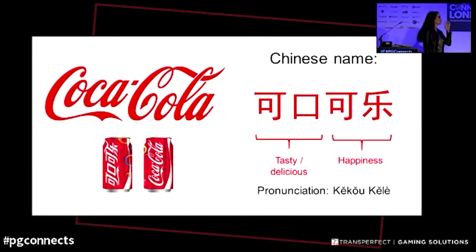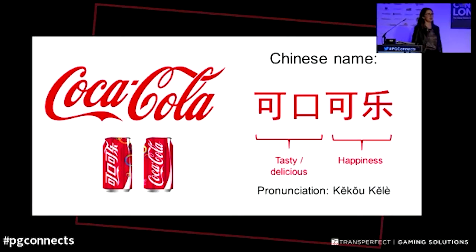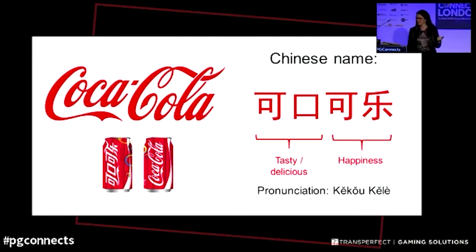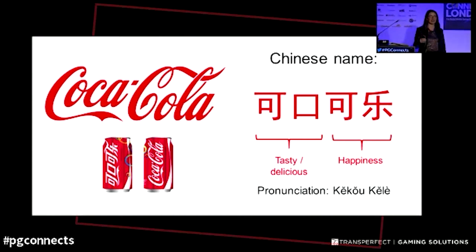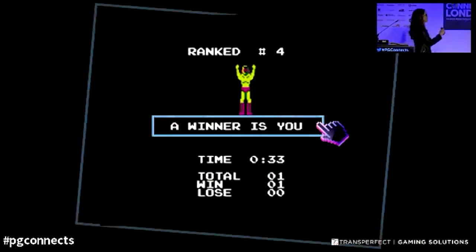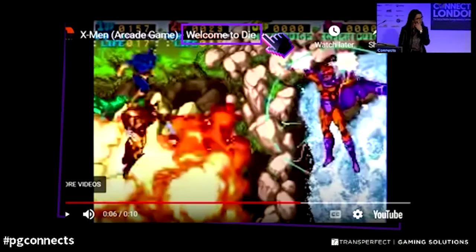Even giants like Coca-Cola — you think someone this big with this much marketing budget won't make a mistake. When Coca-Cola originally launched their name in China, there were two different versions of what it meant depending on the dialect: 'bite the wax tadpole' or 'a female horse stuffed with wax.' In a desperate effort to change their brand name in China, they searched over 40,000 characters to find something that means 'tasty' or 'delicious' or 'happiness in your mouth,' and found something phonetically very similar. And for the gamers, 'A winner is you' from Ghostbusters, and 'Welcome to die' was Magneto's X-Men expression when translated poorly into English.